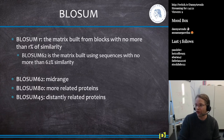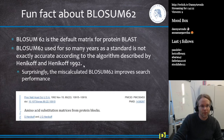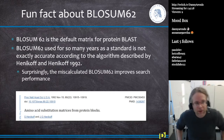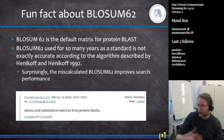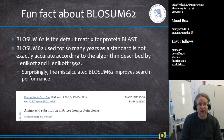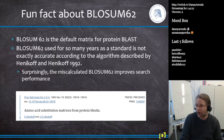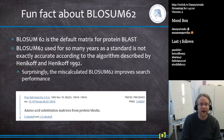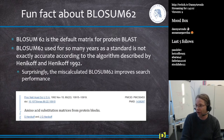Fun fact about BLOSUM62: it is the default matrix when you do protein BLAST. It was used for many years as the standard, but in the Henikoff and Henikoff article from 1992 they made a calculation mistake. Surprisingly, this computation mistake actually improved search performance — it actually made protein comparison better.